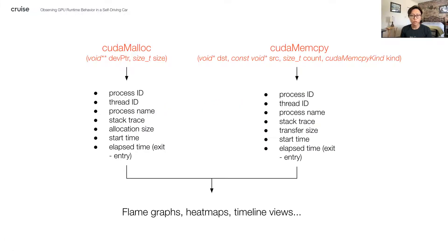Consider an application which uses CUDA for GPU programming. By attaching BPF U-probes onto CUDA APIs like CUDA malloc and CUDA memcopy, we can capture information about GPU memory allocations and data transfers, respectively. BPF enables us to get contextual information about these events when they occur. By capturing process ID and name, thread ID, and a stack trace, we can attribute these events to specific components in our stack as well as specific code paths.